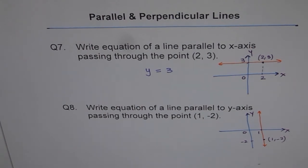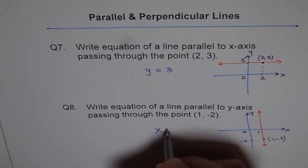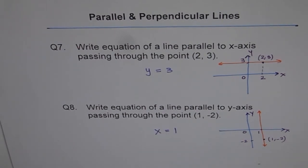What should be the equation of this line? It should be - at every point, x values 1. Y changes. Do you see that? Therefore, the equation of this line is x equals to 1.